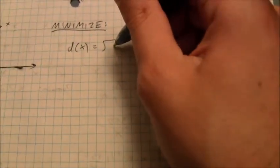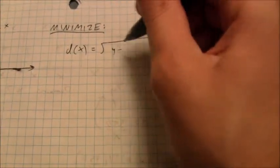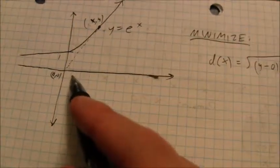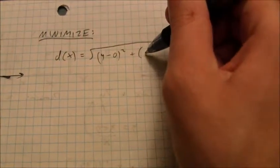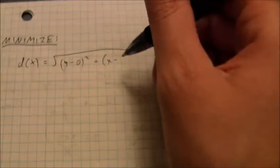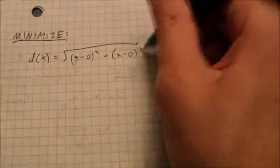So that's y2 minus y1. So that's y minus 0 squared. Remember that other point is 0, 0. Plus x2 minus x1. And the x coordinate of the origin of course is 0 as well. Squared.